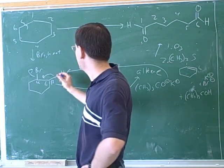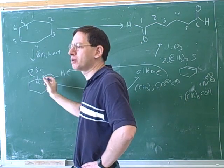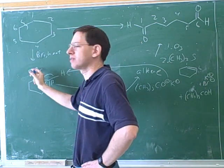So what happens is the base takes the proton from the beta carbon. We form a pi bond between the alpha carbon and the beta carbon, and the leaving group leaves.